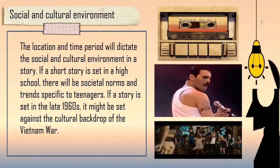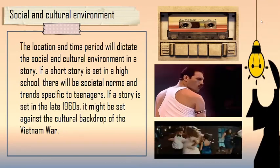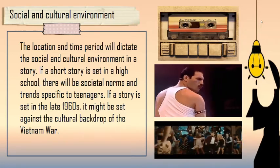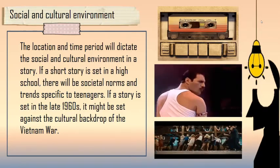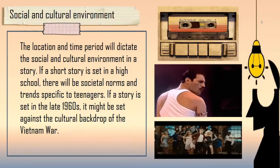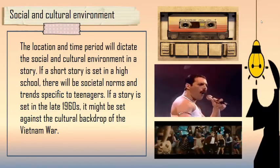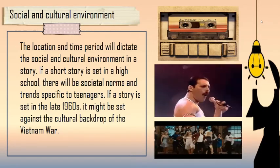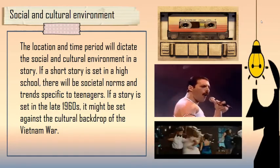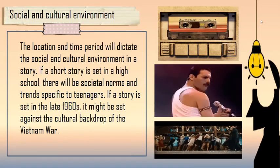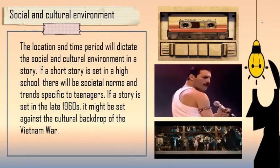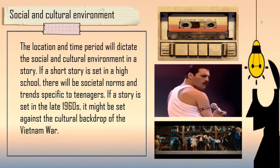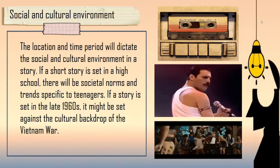Next is the social and cultural environment as an element of settings. The location and time period will dictate the social and cultural environment in a story. If a story is set in a high school, there will be societal norms specific to teenagers. If a story is set in the late 1960s, it might be set against a cultural backdrop of the Vietnam War. An example is the late 1980s, when the mixtape was invented, the Golden Age of Films was created, and the band Queen was also a hit.